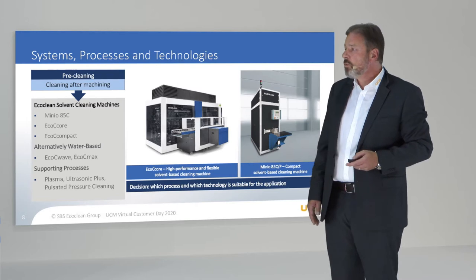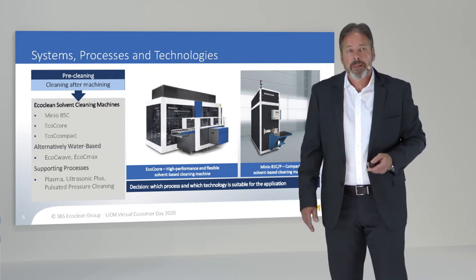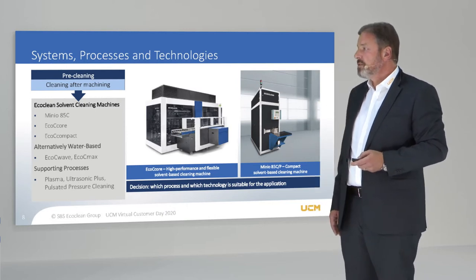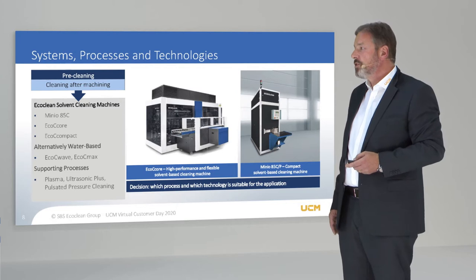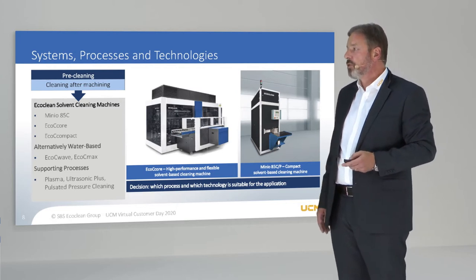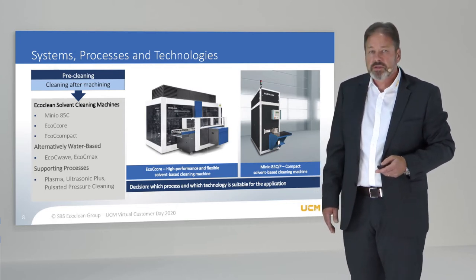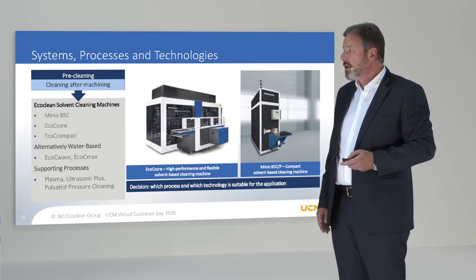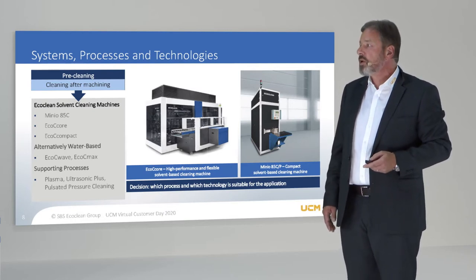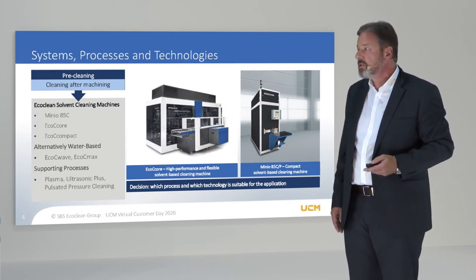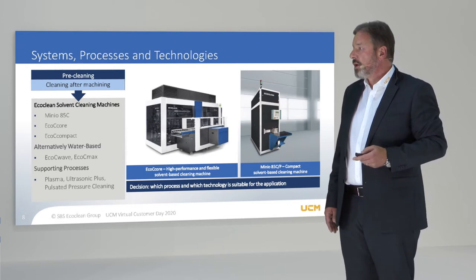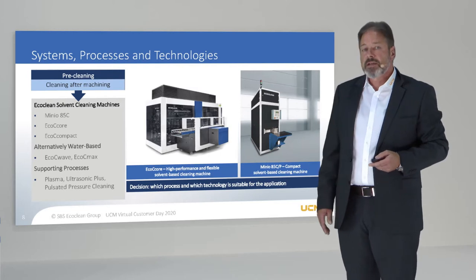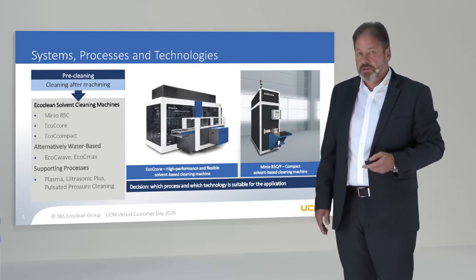In the EcoClean group, we have the great advantage of having all known cleaning processes in our portfolio. In addition to the bath cleaning system, we also have solutions for single part cleaning, clocked or via a multi-axis robot cell. We also have high pressure cleaning systems, high pressure deburring systems, as well as plasma, laser, steam, air blow, and vacuum systems.